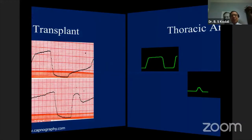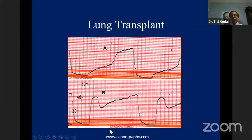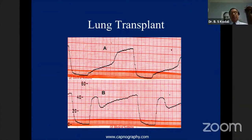In a lung transplant case, a dual waveform is seen — representing the transplanted lung slowly improving its ventilation-perfusion status. When measuring CO2 from a double-lumen tube in a single lung transplant, one waveform comes from the old lung and another from the transplanted lung. When both are mixed, this gives the classic shape of the CO2 waveform after one lung transplant.